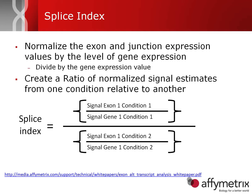To work around this, we normalize the exon and junction expression values by the level of gene expression — meaning we simply divide the individual exon- or junction-level expression values by the expression value of the whole gene. Then we take a ratio of the normalized signal estimates from one condition to the other, and that's what we refer to as the splice index. The formula is: exon 1 signal in condition 1 divided by gene 1 signal in condition 1, over exon 1 signal in condition 2 divided by gene 1 signal in condition 2. For further information, refer to the associated paper.